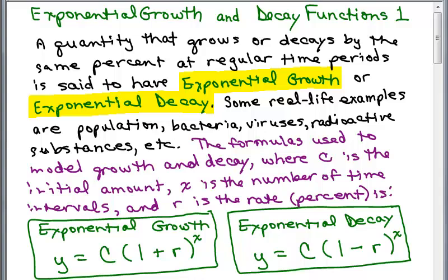And so we have two different formulas depending if we are talking about exponential growth or exponential decay. And in these formulas, C is the initial amount.